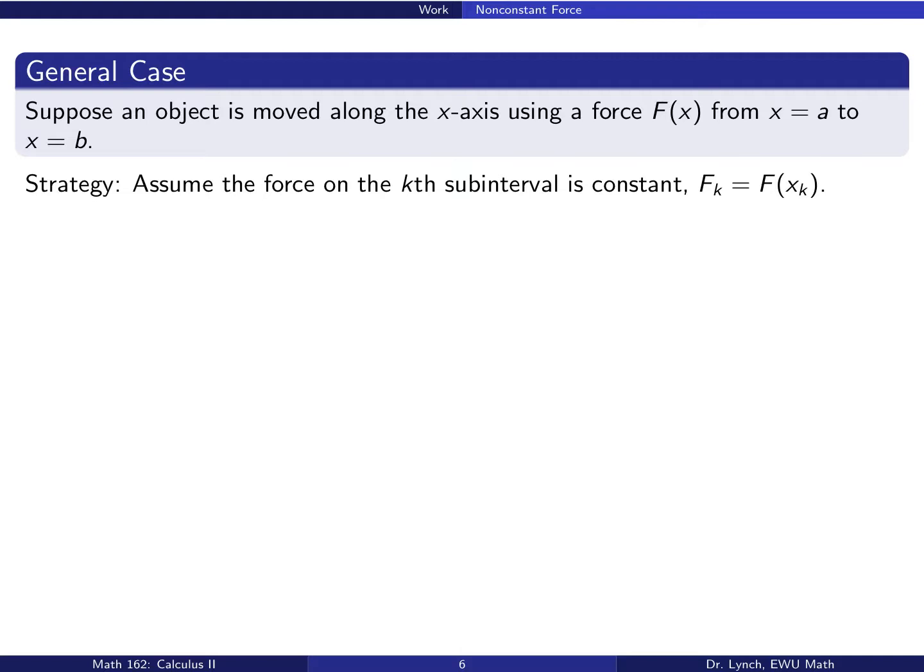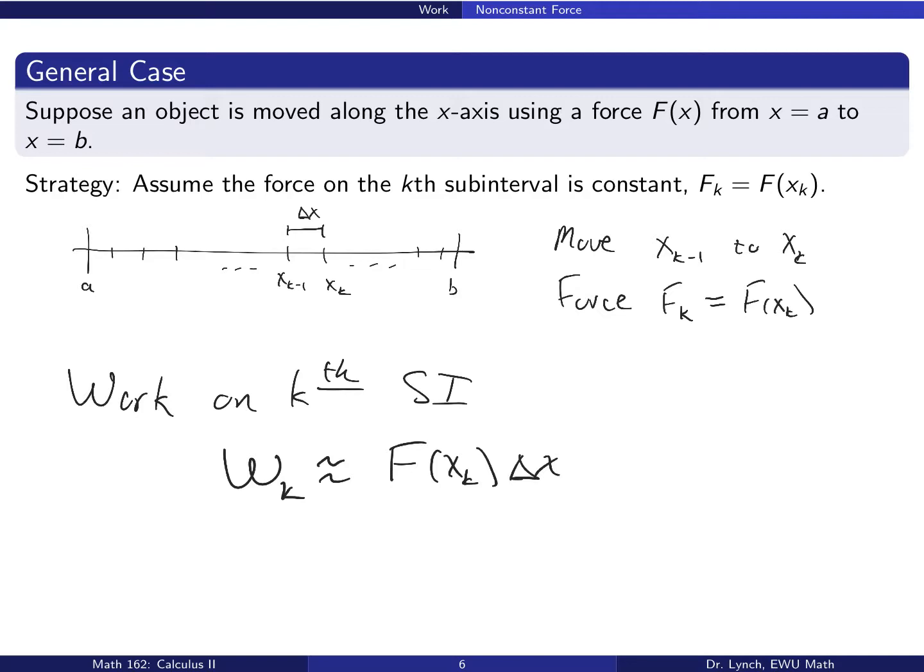In that case, the work on that k-th sub-interval, say from x sub k minus 1 to x sub k, is going to be the force over the distance. And if we think about dividing the interval from a to b into n sub-intervals of equal width delta x, that work is exactly f of x sub k delta x.